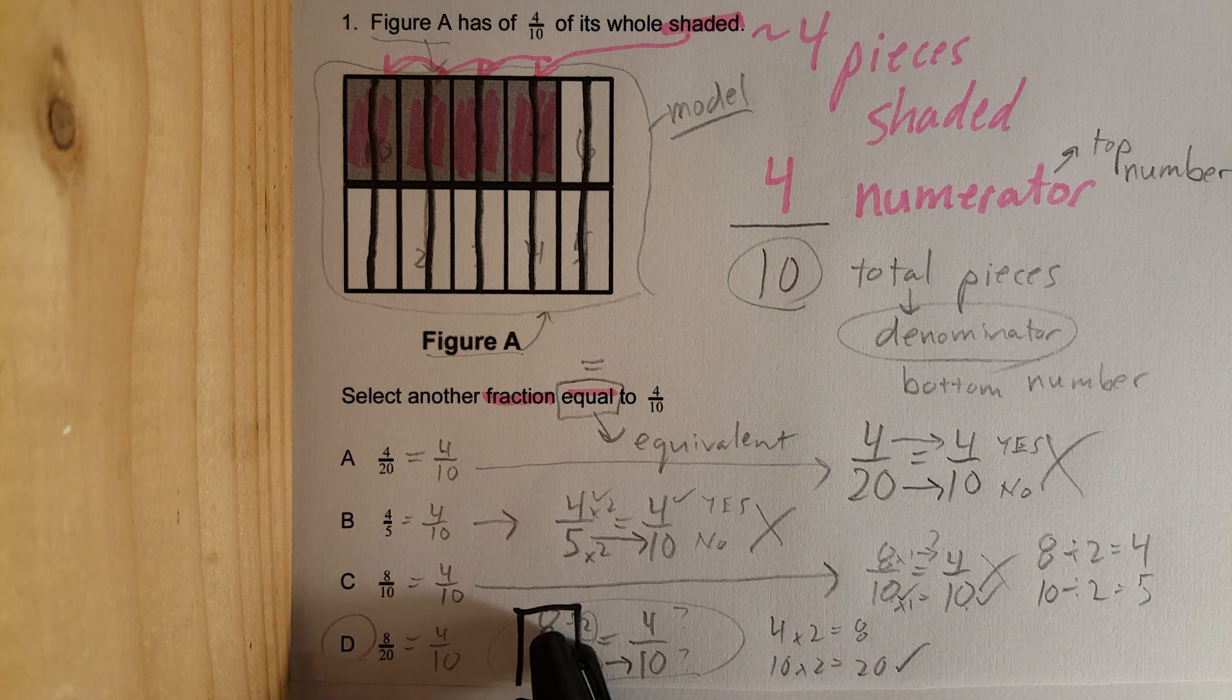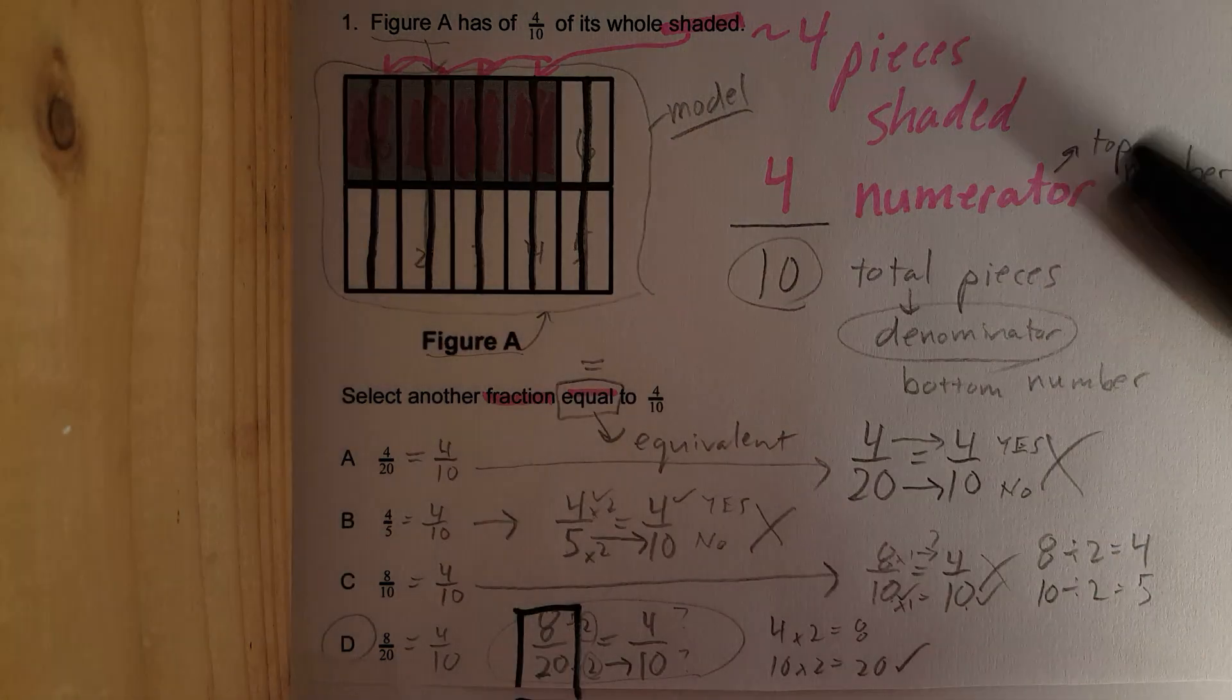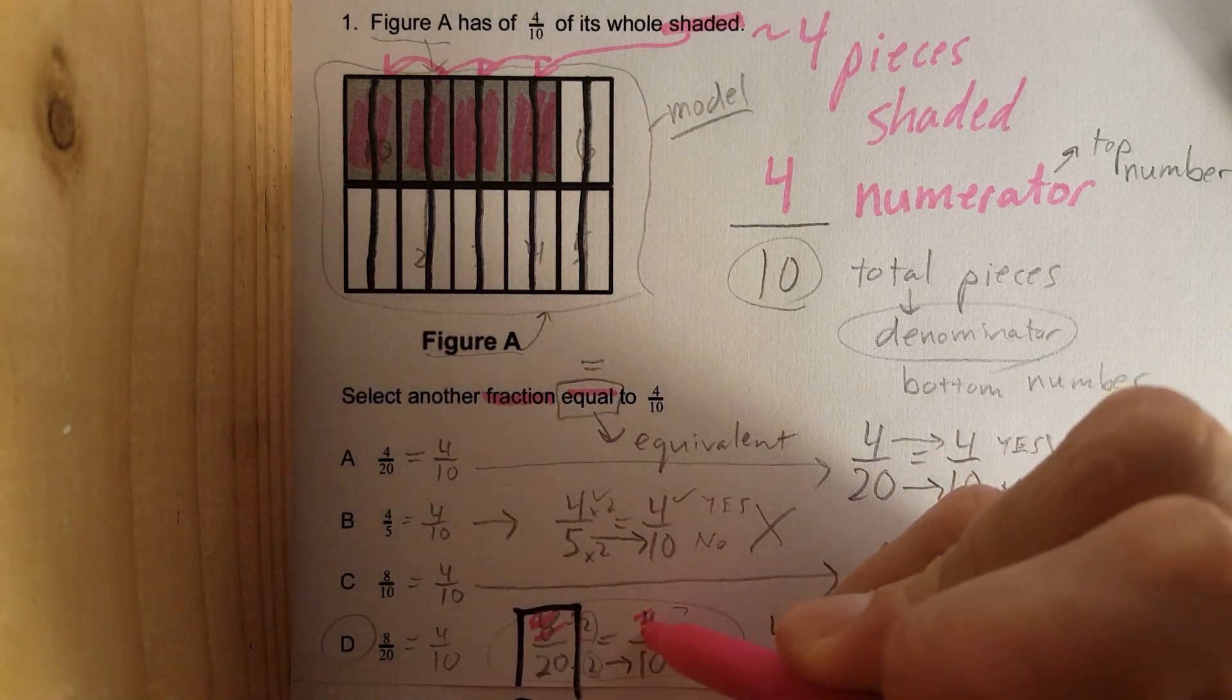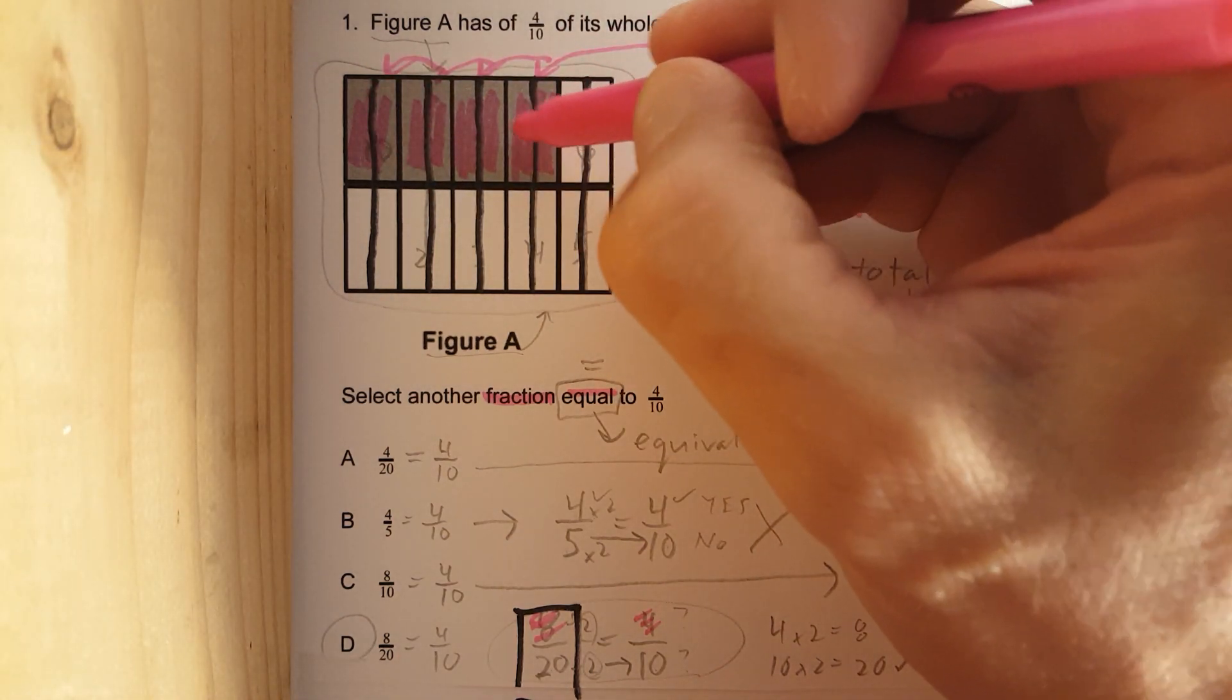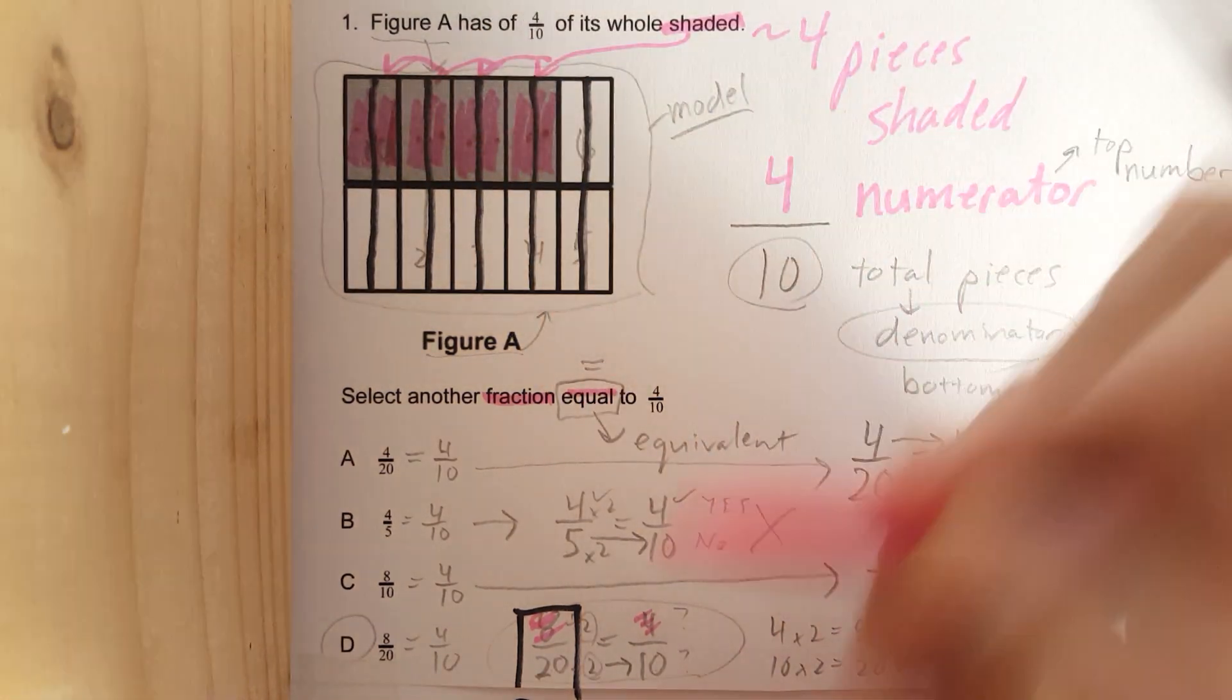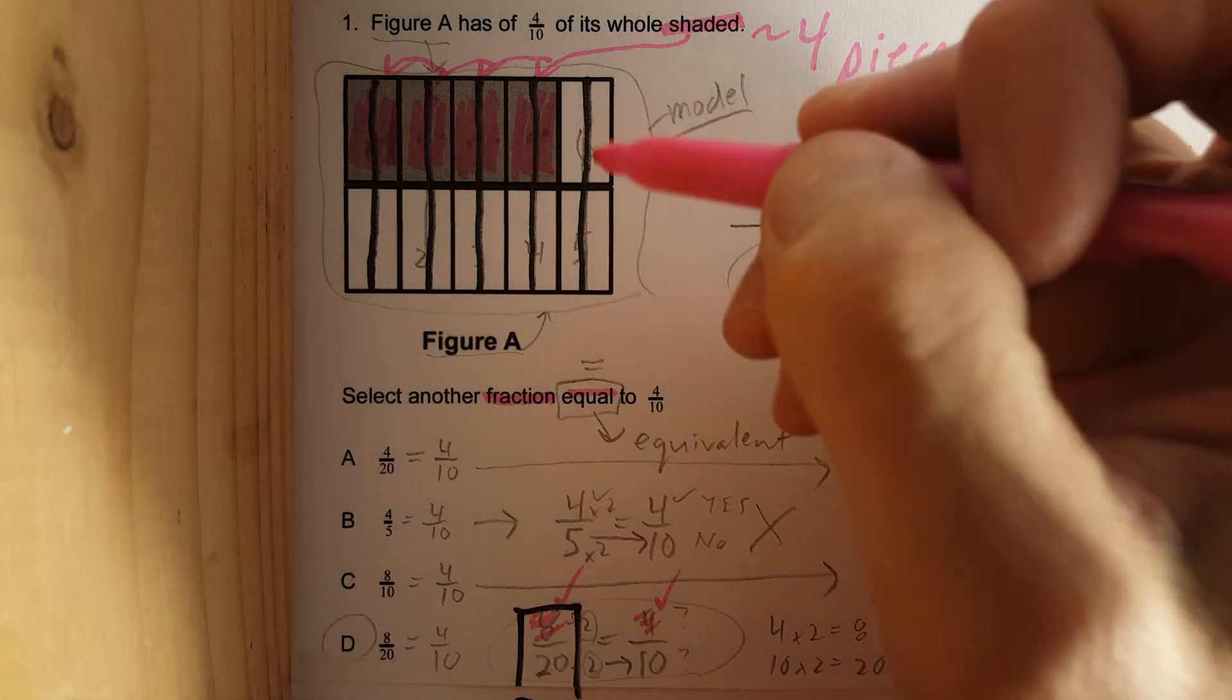So, check this out. 8 pieces should be shaded. Right? That was our top number. We had 4 to start with. Now, we have 8. All I did was cut all these in half, equal parts. Let's count them. 1, 2, 3, 4, 5, 6, 7, 8. 8. It works. There used to be 4. Now, there's 8.